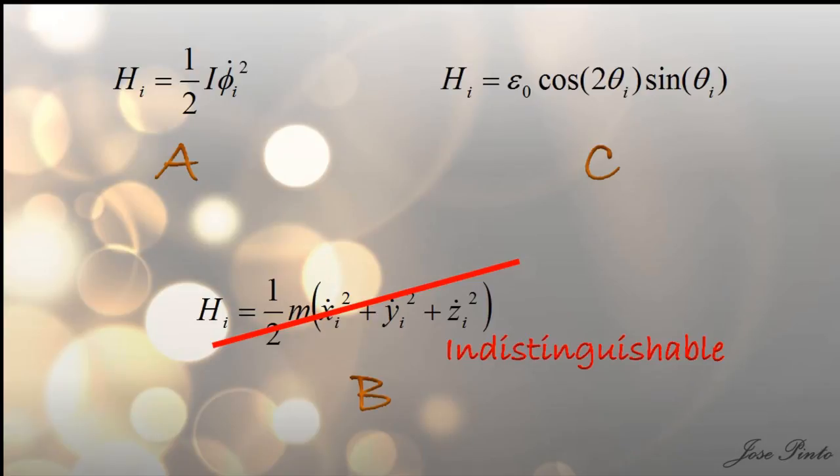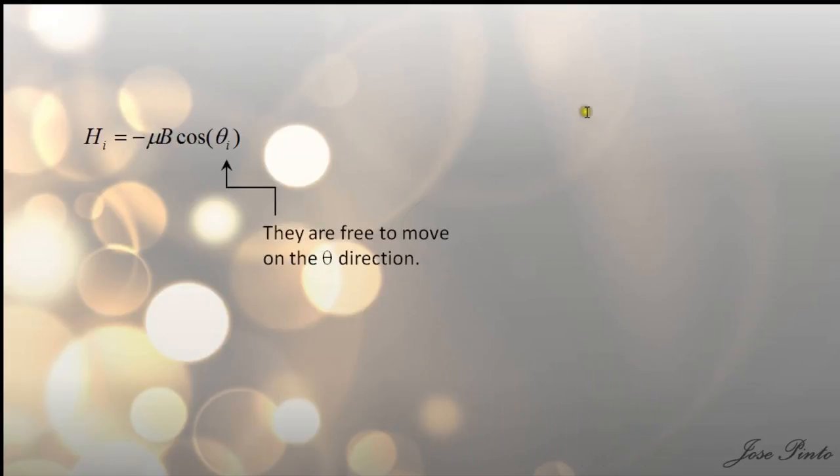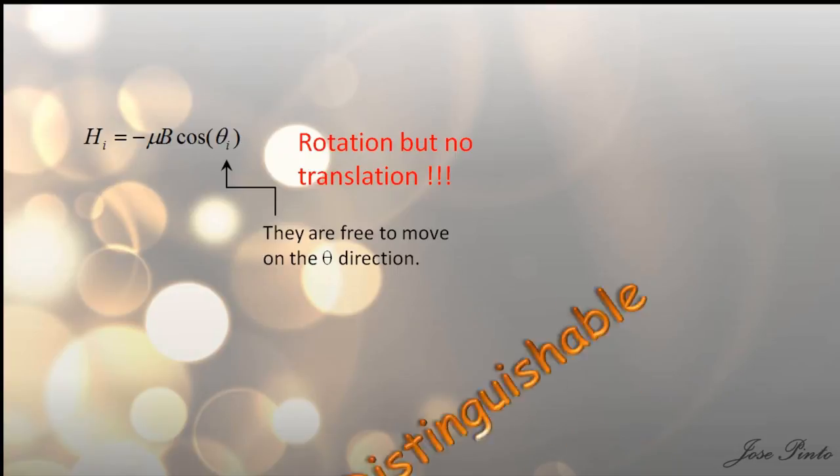I'll give you another example. Take a look at this Hamiltonian. This one is for magnetic dipoles having magnetic moment mu in an external magnetic field B. They are free to move on the theta direction. But there is no term for translation. So they are fixed in space. Therefore, they are distinguishable.